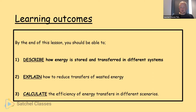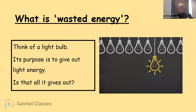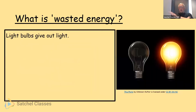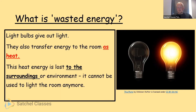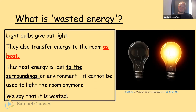Next: how to reduce wasted transfers of energy. We need to revisit what wasted energy is. If we think of a light bulb, its purpose is to give out light energy — but that's not all it gives out. If you've ever had to replace a light bulb you'll know it needs to cool down before you can take it out. So it doesn't just give out light, it also gives out thermal energy or heat. This heat energy is lost to the surroundings — it's still there, but it's not used to light the room, so we say it's wasted.